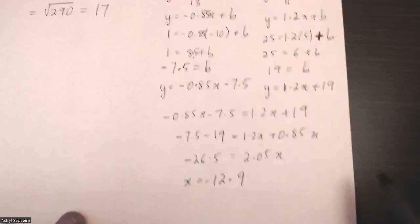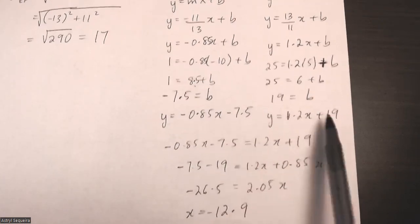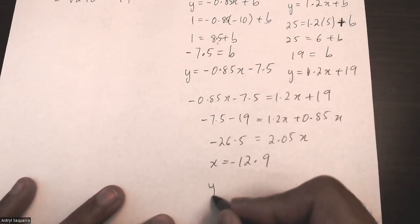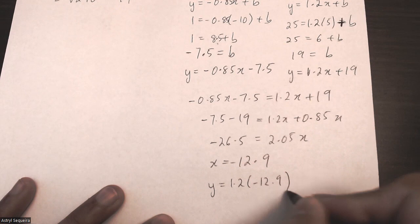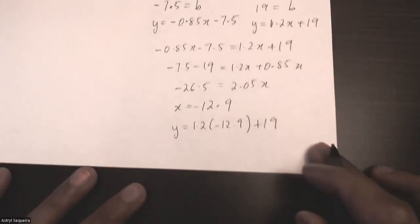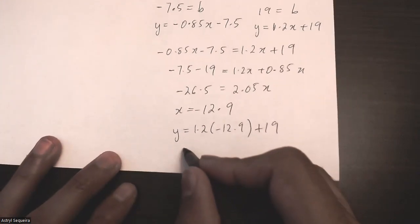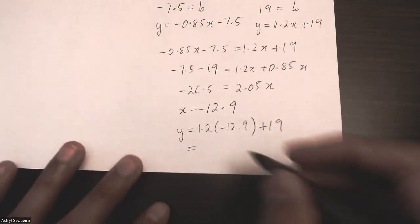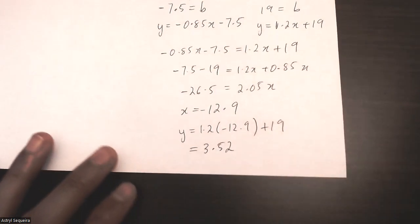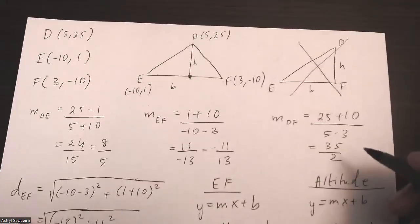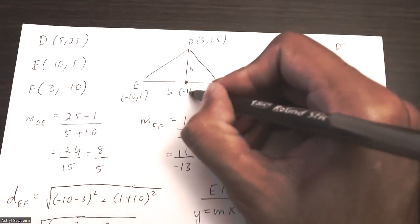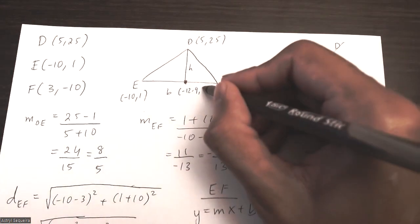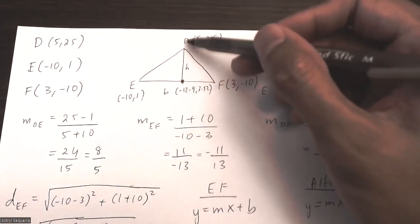Once I have x, I can find y by substituting into the altitude equation: y equals 1.2 times negative 12.9 plus 19, which gives y approximately 3.52. So the foot of the altitude is at the point (negative 12.9, 3.52).